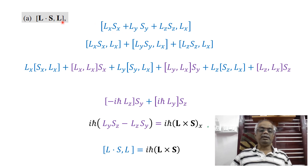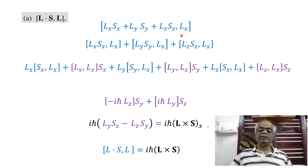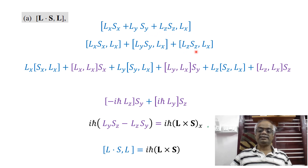L contains three components: LX, LY, LZ. First we take LX. We can split the commutator into three parts: [LX·SX, LX], [LY·SY, LX], and [LZ·SZ, LX].